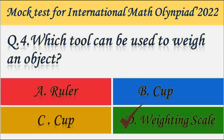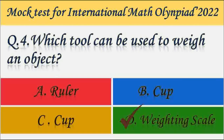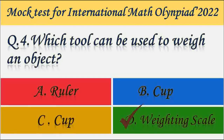Question number 4. Which tool can be used to weigh an object? Options are Ruler, Cup, and Weighing Scale. Answer D — Weighing Scale.